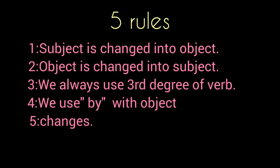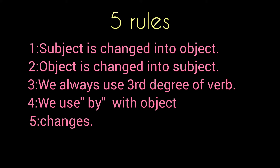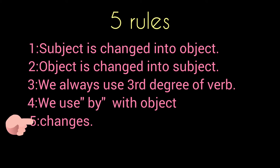There are 5 rules to make passive voice sentences. First rule: subject is changed into object. Second: object is changed into subject. We always use the third form of the verb in passive voice sentences. Next, we use 'by' with the object. Next, we do some changes.